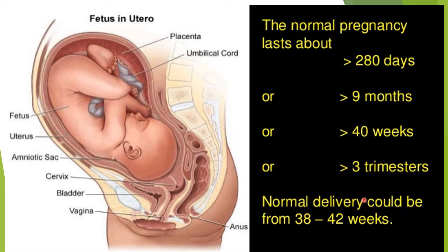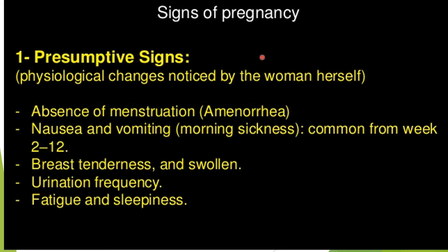Normal delivery could be from 38 to 42 weeks. If it is below 32 weeks, we call it premature delivery. Signs of pregnancy — presumptive signs are physiological signs noticed by the woman herself: absence of menstruation (amenorrhea), nausea and vomiting (morning sickness), breast tenderness and swelling, increased frequency of urination, and easy fatigability and sleepiness. These are the early signs of pregnancy.